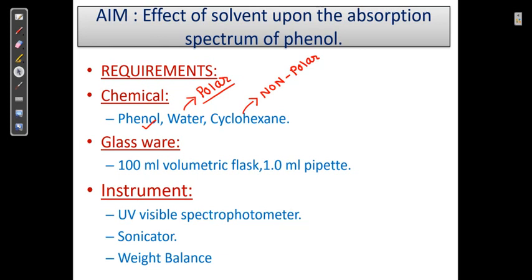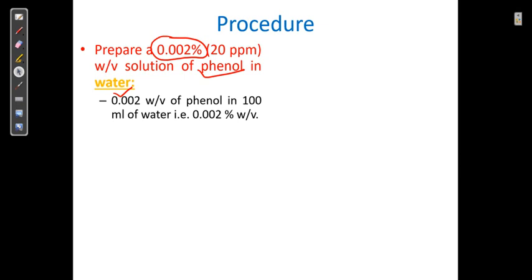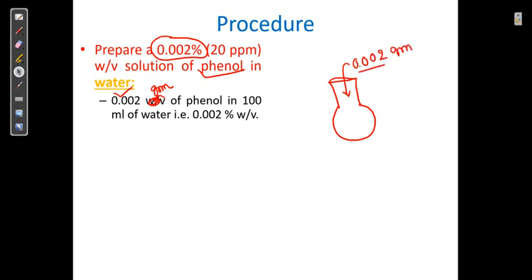The procedure: first, we require to prepare a 0.02% weight by volume solution of phenol in water. This is the preparation of phenol in polar solvent. To prepare this, take a 100 ml volumetric flask, weigh 0.002 grams of phenol, add it to the flask, and add sufficient water to make up to 100 ml.